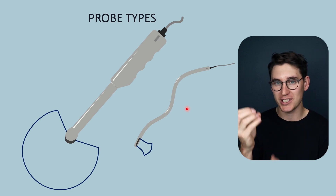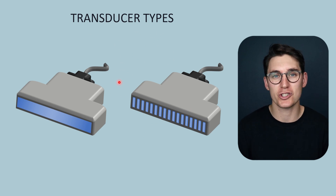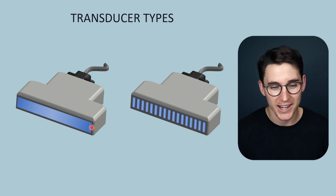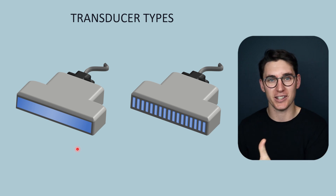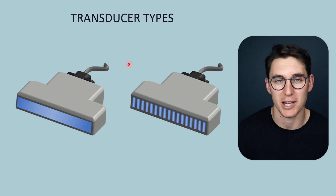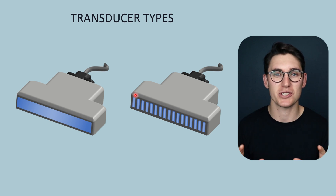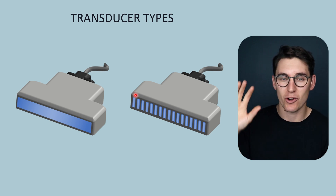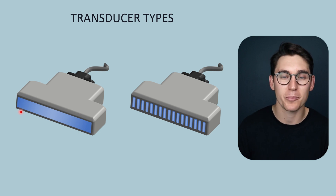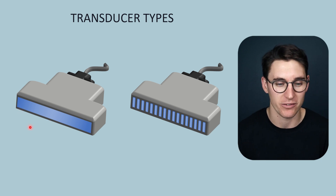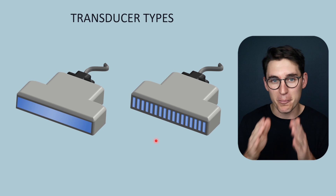Now we're going to look at the transducer types, which refers to how we go about creating our wave — generally referring to the crystals on the face of our transducers. Our linear and curvilinear transducers can have the same transducer type; it speaks to how we propagate that ultrasound wave. Broadly, we can separate transducer types into single element transducers and array transducers. Single element transducers have just one PZT crystal making the ultrasound wave, but in practice we've largely moved to multi-element array transducers.